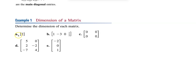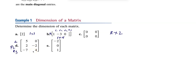Let's look at the dimensions of these matrices. The first one has one row and one column — it's a 1 by 1. The next has one row but four columns — it's a 1 by 4. Here we have a 2 by 2: two rows and two columns. Then a 3 by 2: three rows and two columns. And finally a 3 by 1. So the dimension is rows by columns — that's how big the matrix is.